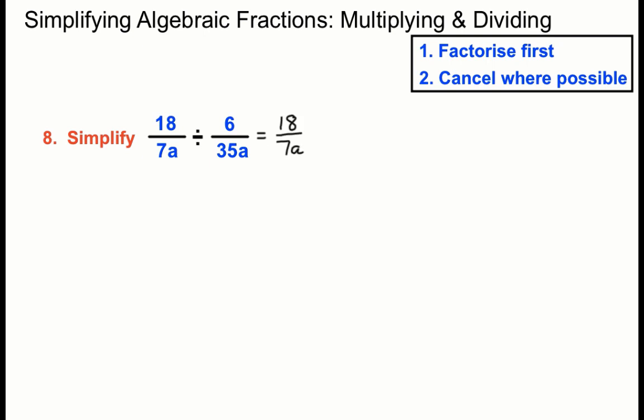18 over 7a is normal. Then we'll turn it into a times and we'll turn the second fraction upside down. We'll reciprocate. Fancy name. Okay, then we'll see if we can cancel where possible. There's no factorising opportunities in this one.